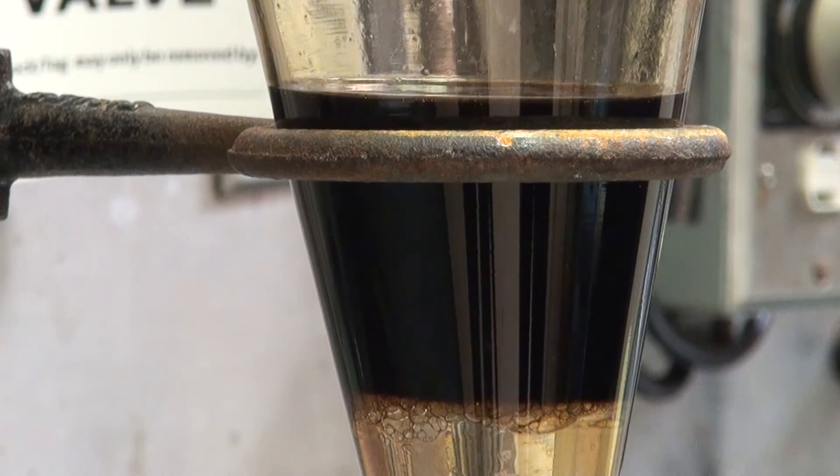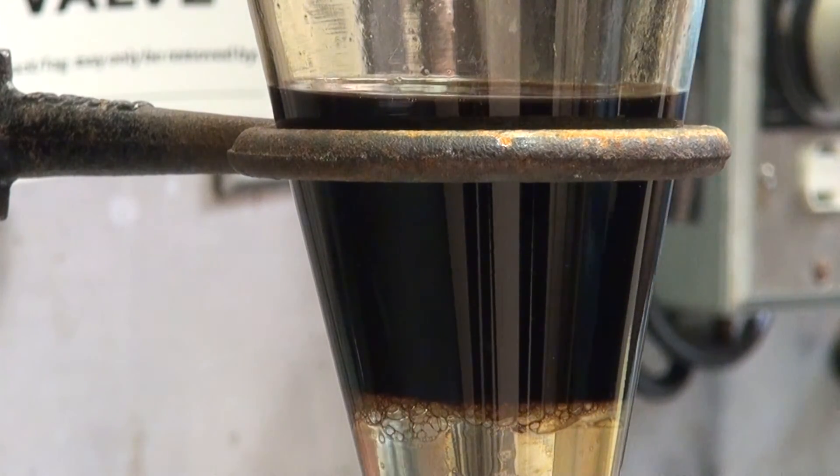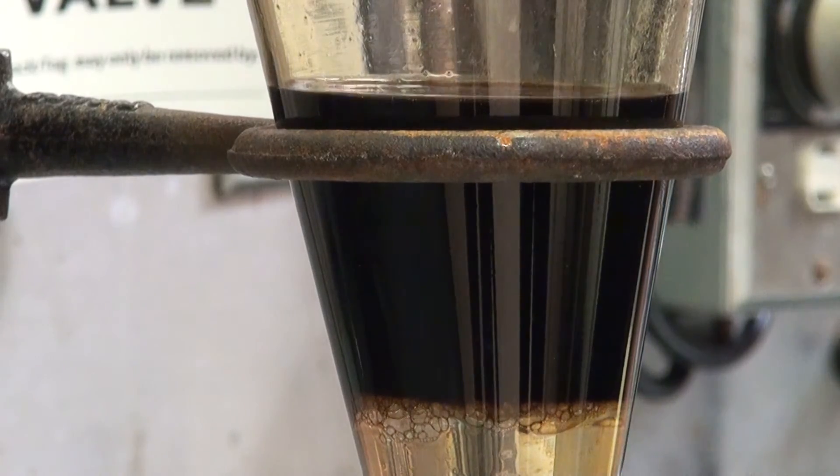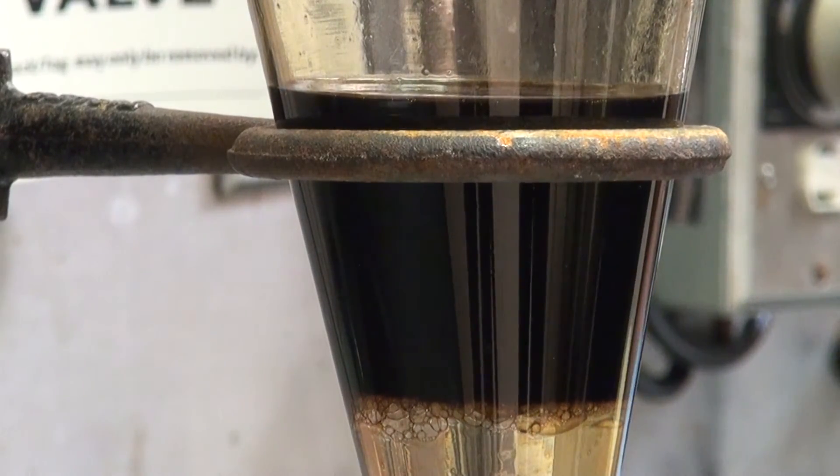Also here, you can do the drop test to know which layer is which. If you add a drop of dichloromethane, you can follow it to the bottom layer.